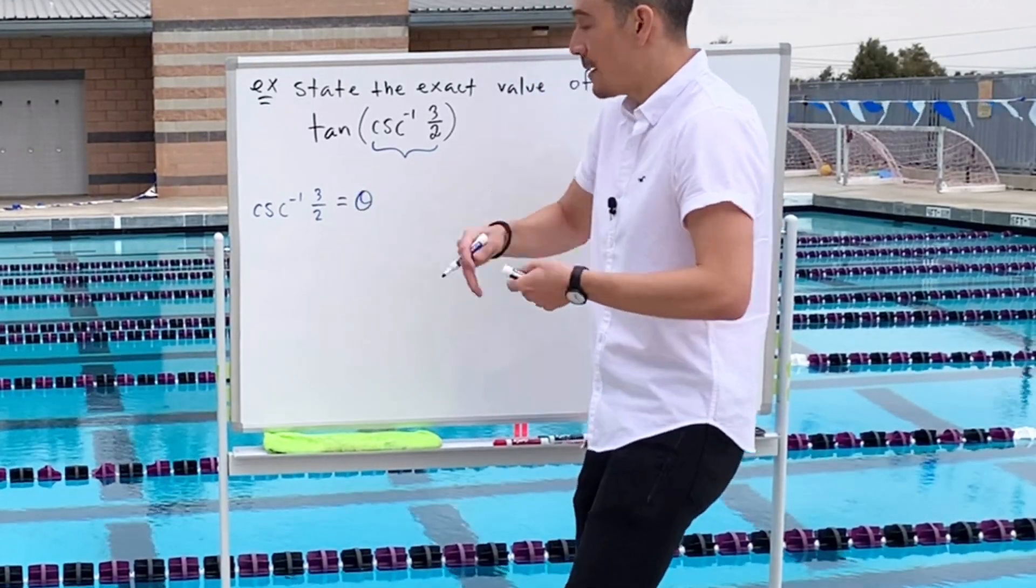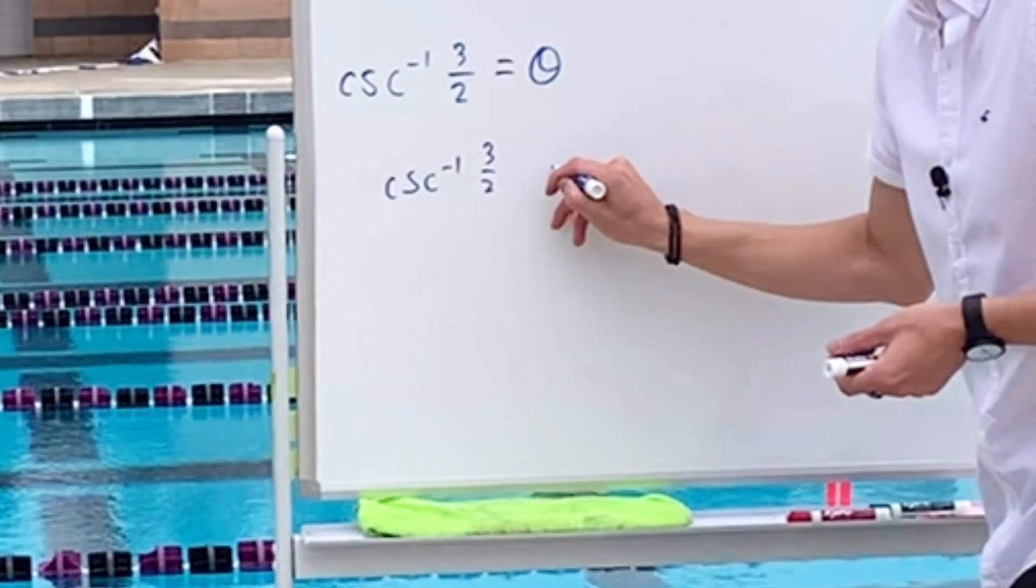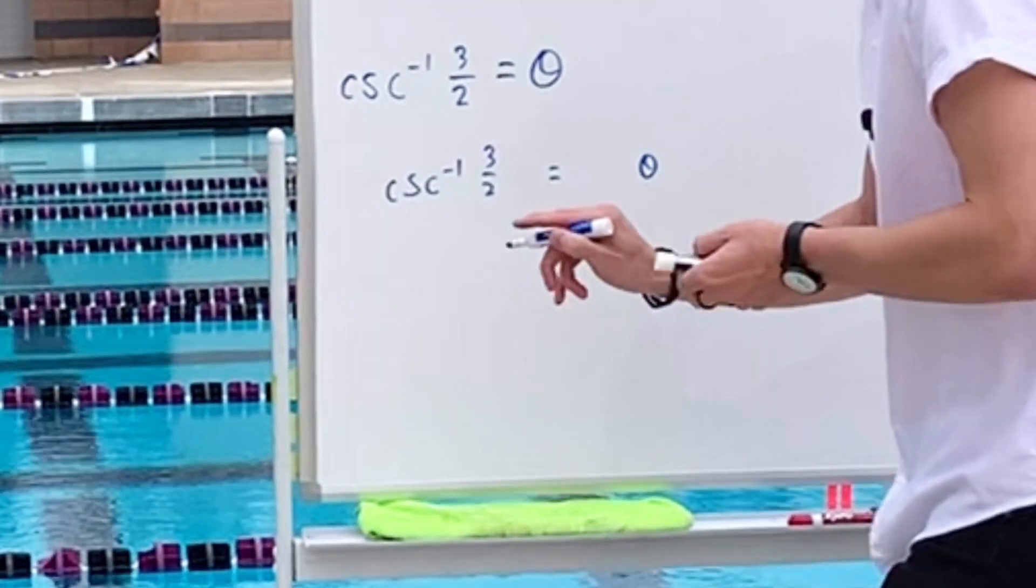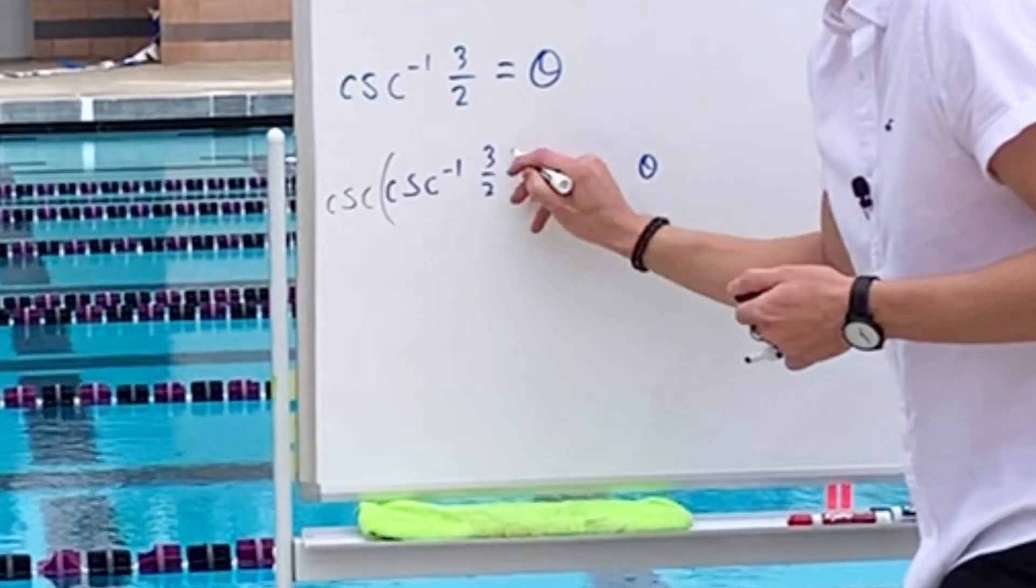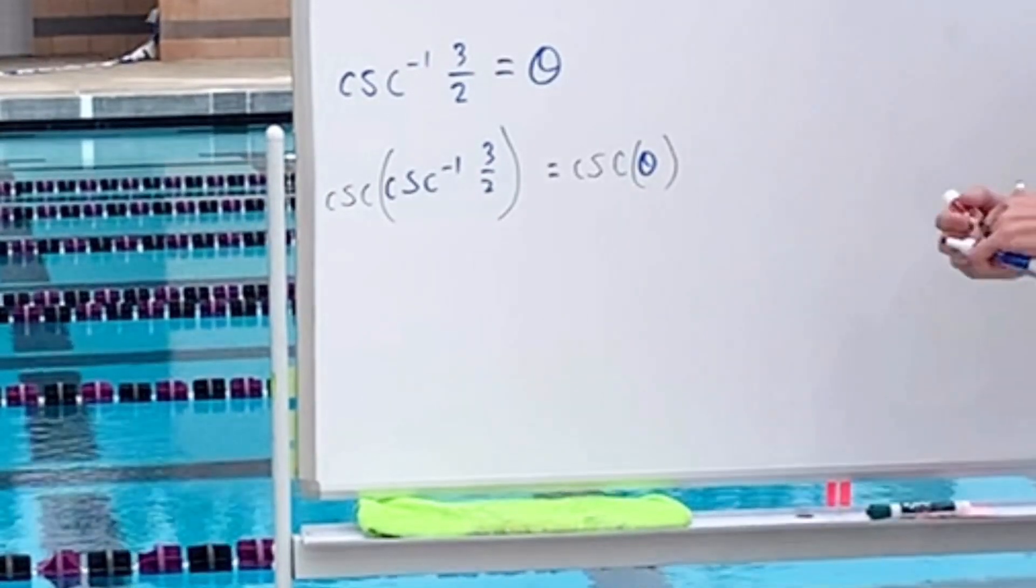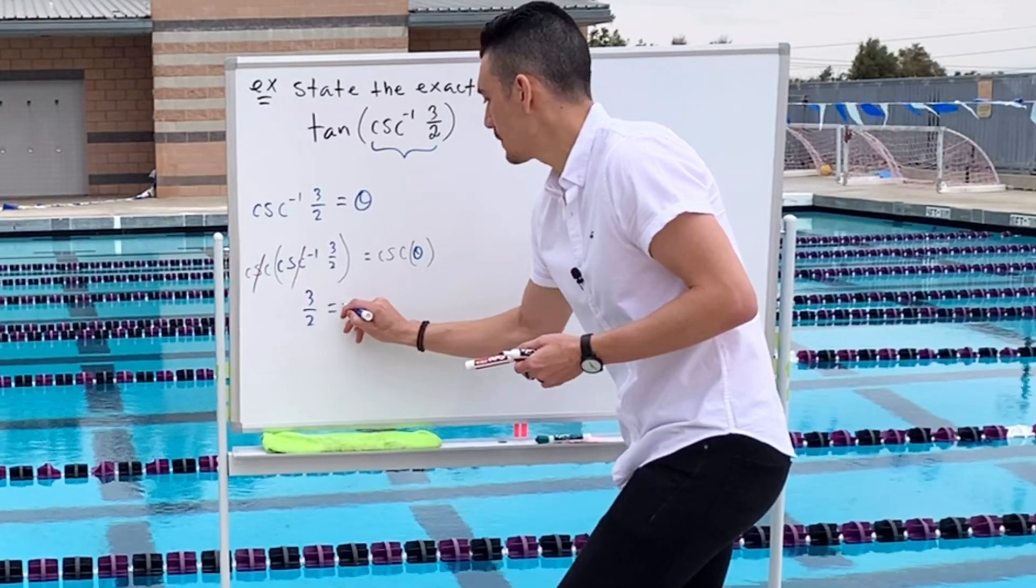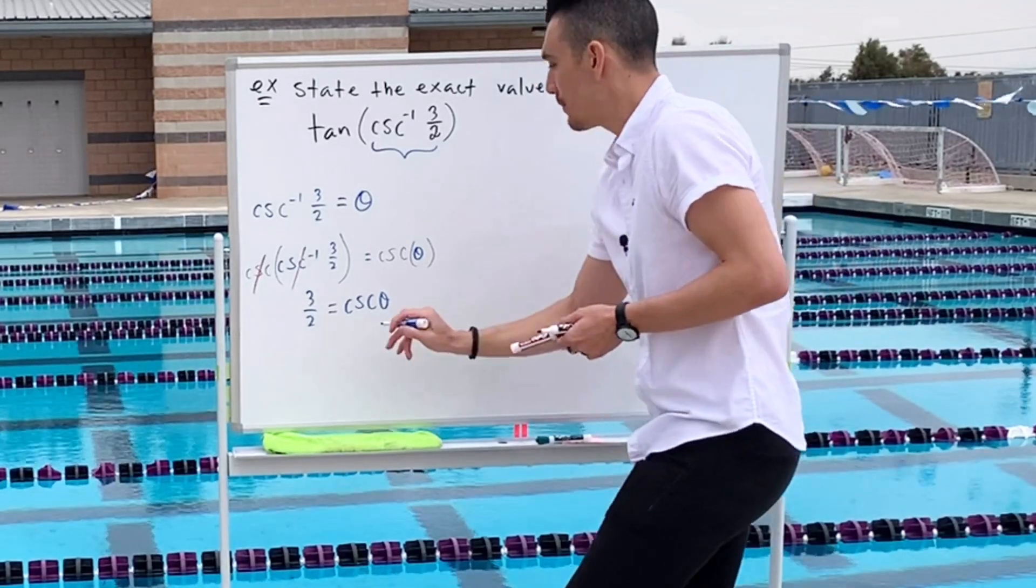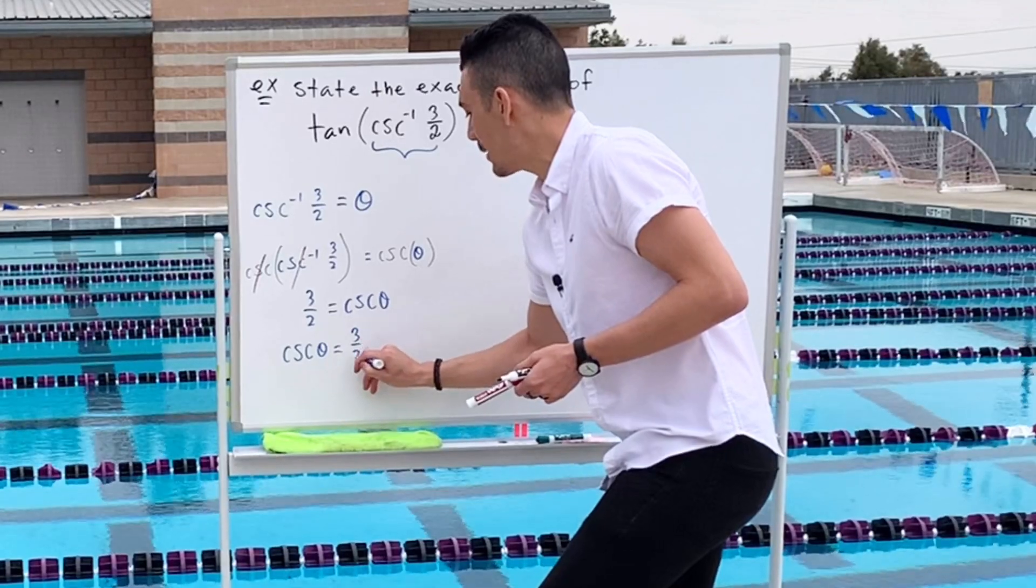If we write it down again, a little bit smaller this time, I'll give it some space. What I can do to both sides is I can take the cosecant of both sides. So go cosecant of the left and go cosecant of the right. Because we know that these knock out three halves equals cosecant theta. Now I can switch left with right. So I have cosecant theta equals three over two.